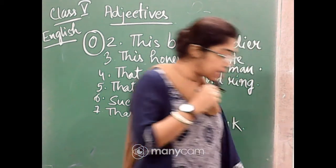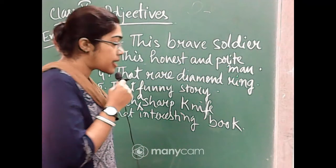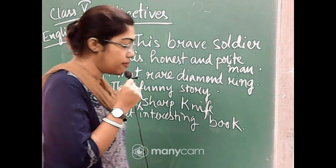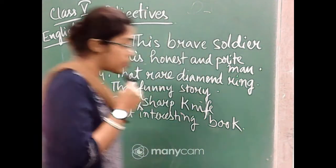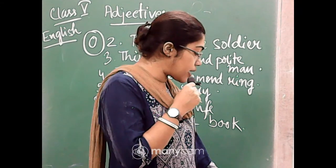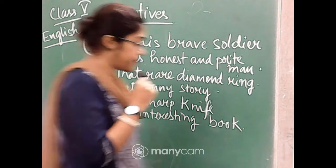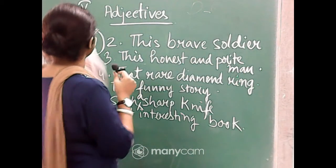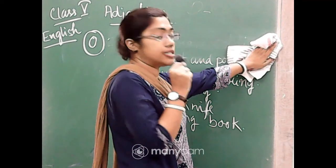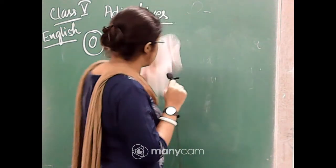Page number thirty-five, exercise number R. Pick out the interrogative and possessive adjectives in the following sentences and arrange them in the column below. So from each sentence you will pick out what are the interrogative adjectives. After completing the interrogative adjectives we will go for the possessive adjectives.